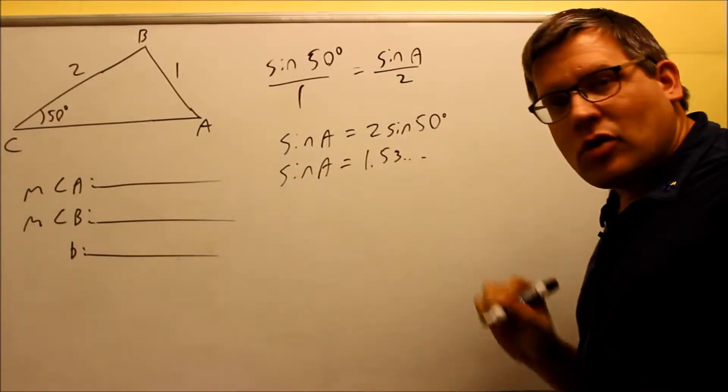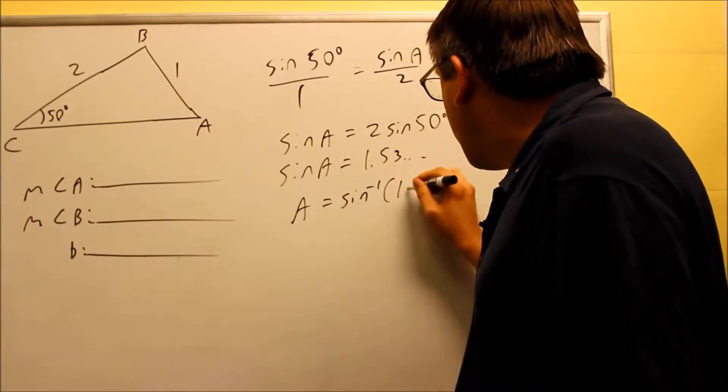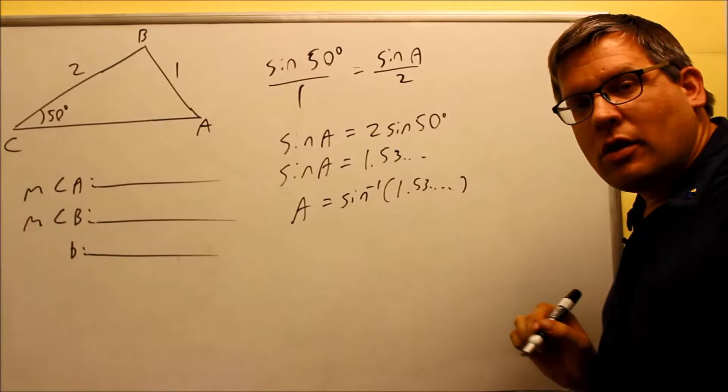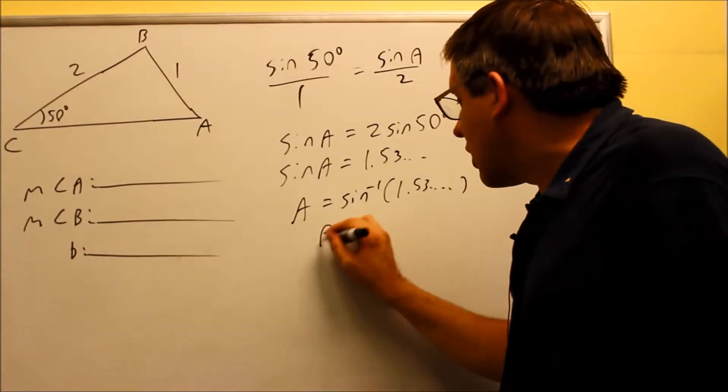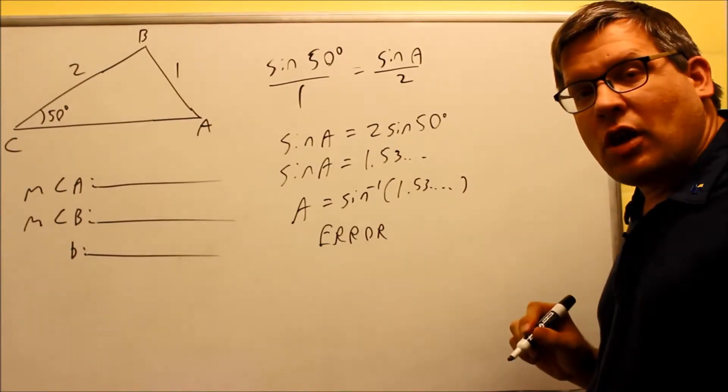You want to take the inverse of both sides, so A is equal to the inverse of 1.53 continuing. Now, if you put this in your calculator, what you're going to notice is your calculator is going to give you an error. It'll say domain error, or it's not going to be able to give you an answer.